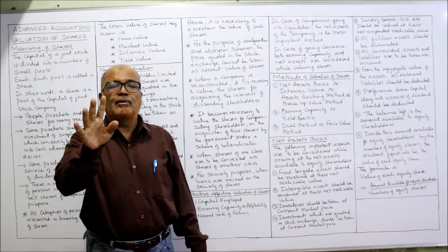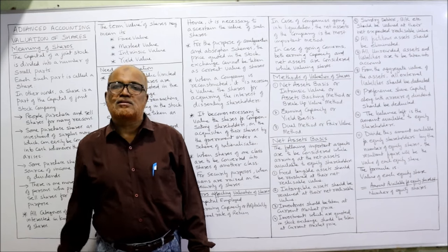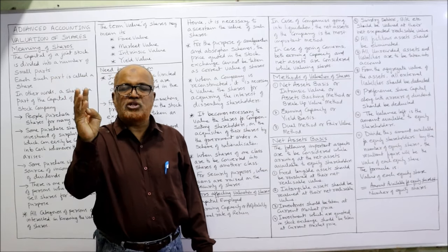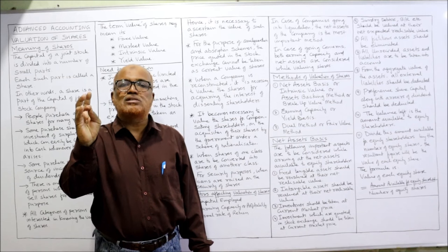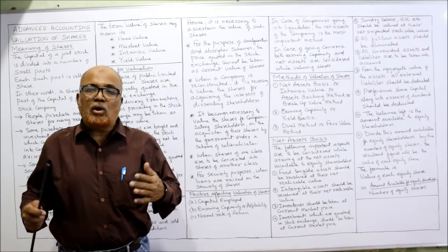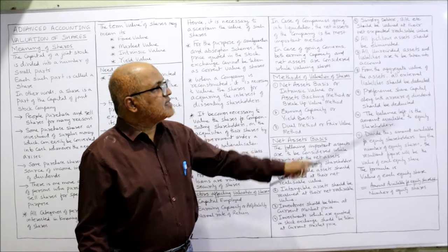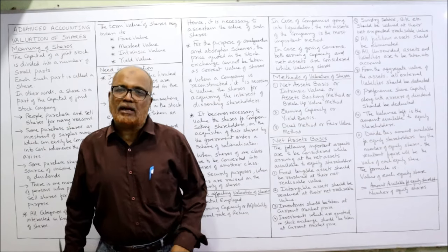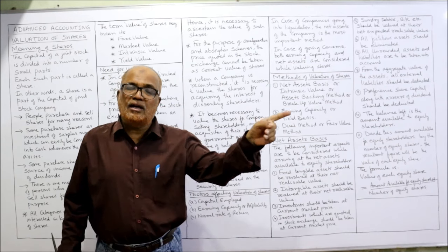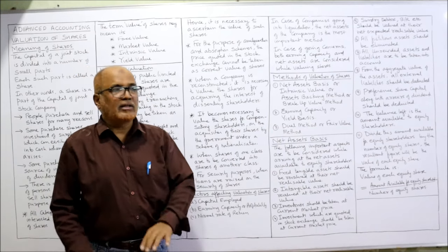Next, all fictitious assets should be eliminated. Fictitious assets are imaginary assets — not real assets. Examples are preliminary expenses, discount on issue of shares, discount on issue of debentures, and accumulated losses. These items normally appear on the asset side of the balance sheet but are called fictitious assets — do not take them; eliminate them. Also, all unrecorded assets and liabilities should be taken into account, as sometimes adjustments mention assets or liabilities not recorded in the balance sheet.